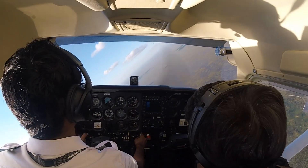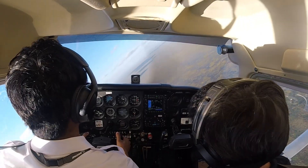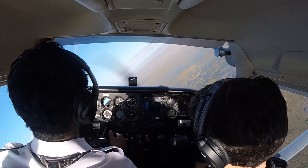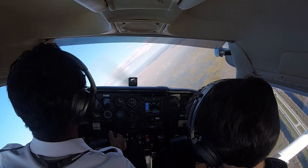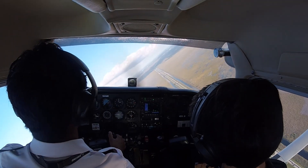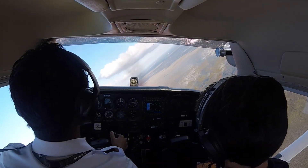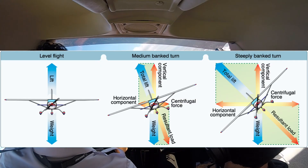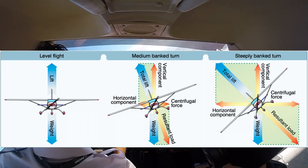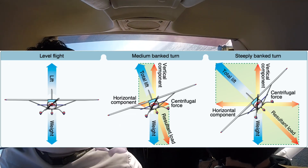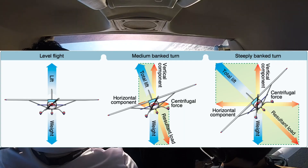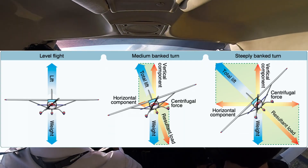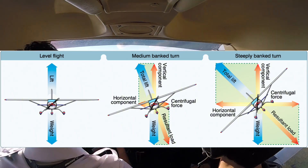Now before talking about all the tricks and tips to perform a steep turn, let's first talk about how forces act on an airplane differently in various scenarios: level flight, medium turns and steep turns. In level flight, two forces are in perfect balance — lift pulls the airplane upwards while weight or gravity pulls it downwards. These opposing forces keep the airplane steady and flying straight.